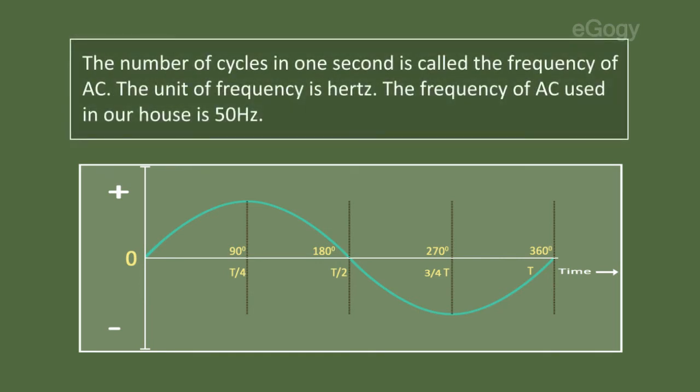The number of cycles in one second is called the frequency of AC. The unit of frequency is hertz. The frequency of AC used in our house is 50 hertz.